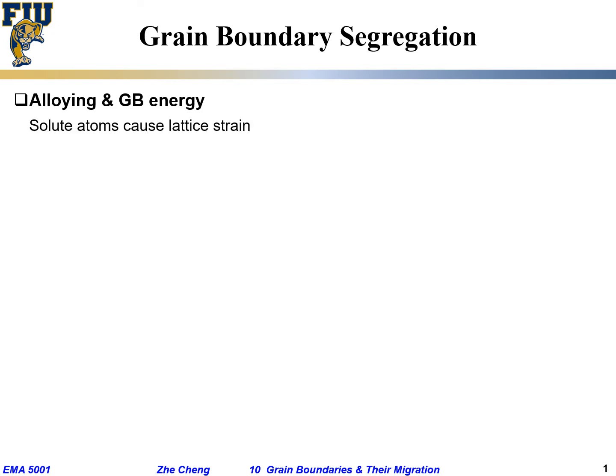Alloy in the grain boundary — what does alloy mean? We have a metal, quite often a pure element. Alloy means you add some other foreign metallic elements. Quite often that's what alloy is, and those foreign metallic elements would cause lattice strain.